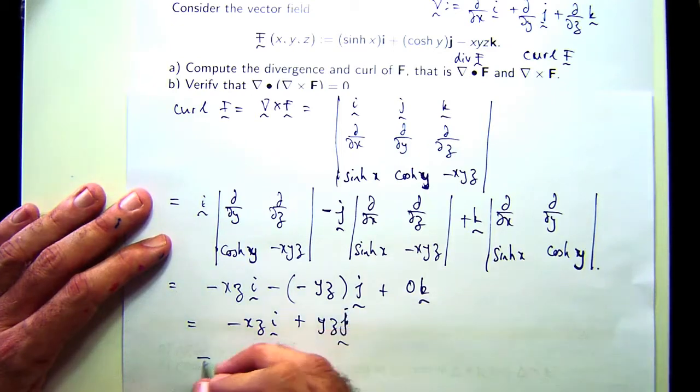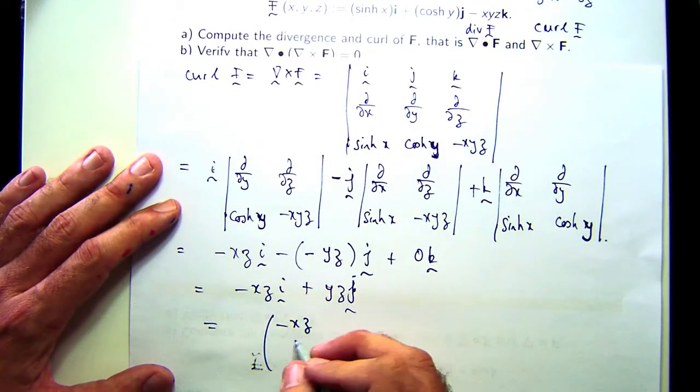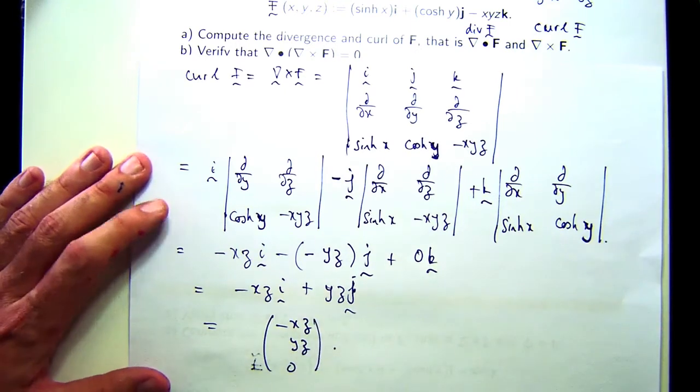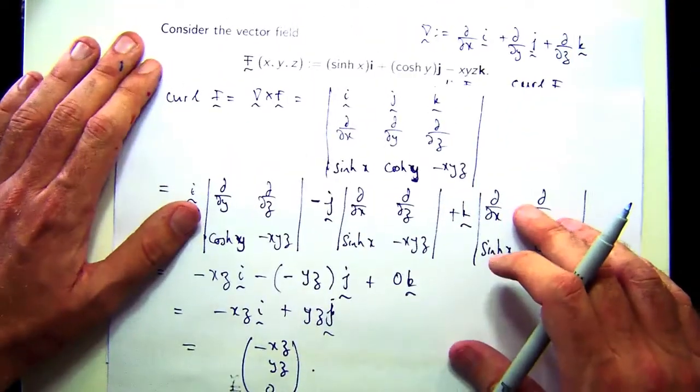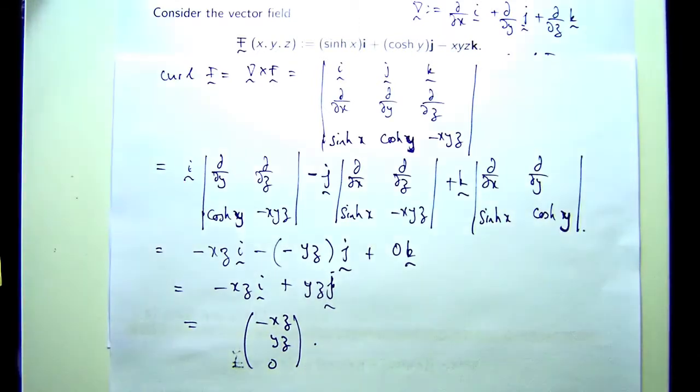If you wanted to write that as a column, you could write it like this. Compare your answer with the previous thing we calculated. You now get a vector for your answer. When you're computing the curl, you should always get a vector, just like when you compute a cross product. If you compute the divergence and you get a vector, something's wrong. And if you compute the curl and you don't get a vector, there's something wrong.